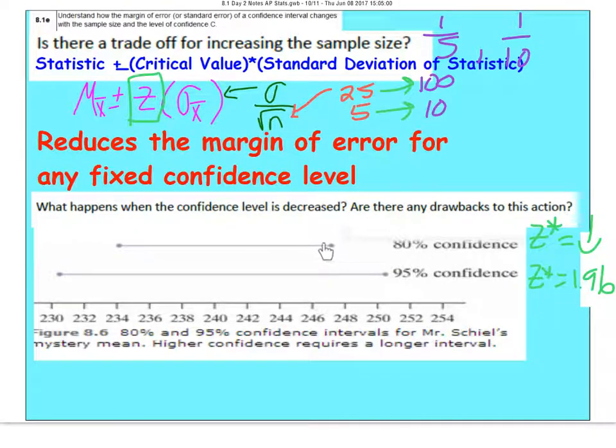Well, if we have a lower margin of error, it means we have less spread in our confidence interval. We are capturing fewer pieces of data in there. So my margin of error has actually been reduced.